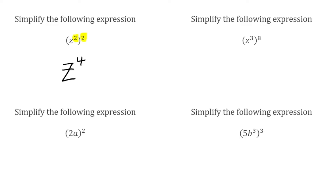For the next question, we're again raising a power to a further power, so we have to multiply the indices. We've got z to the power of 3, or z cubed, and then we're raising that to the power of 8. So 3 multiplied by 8 is 24, giving us z to the power of 24.